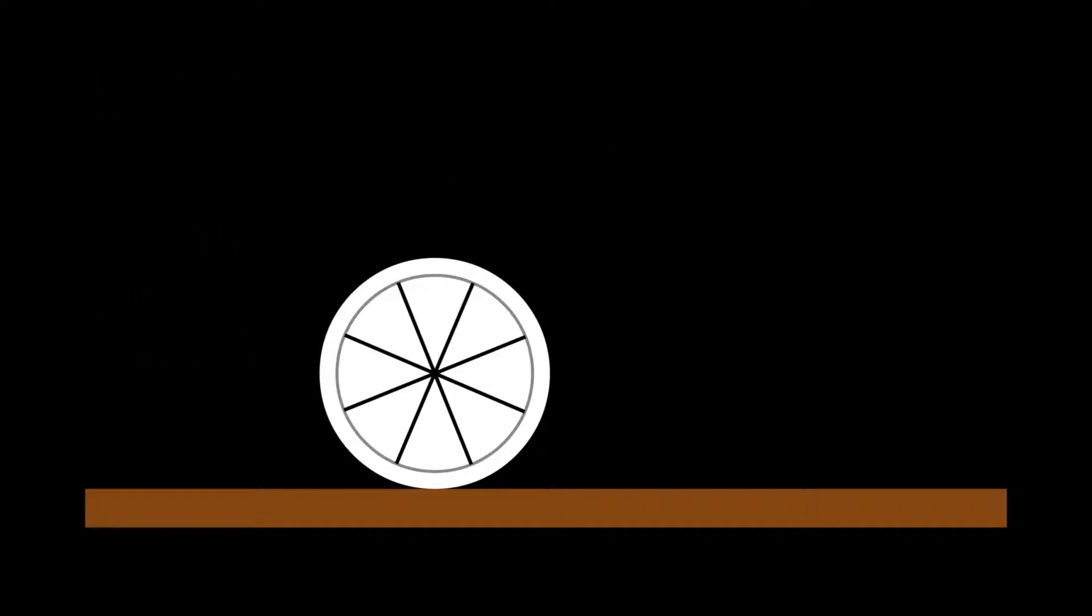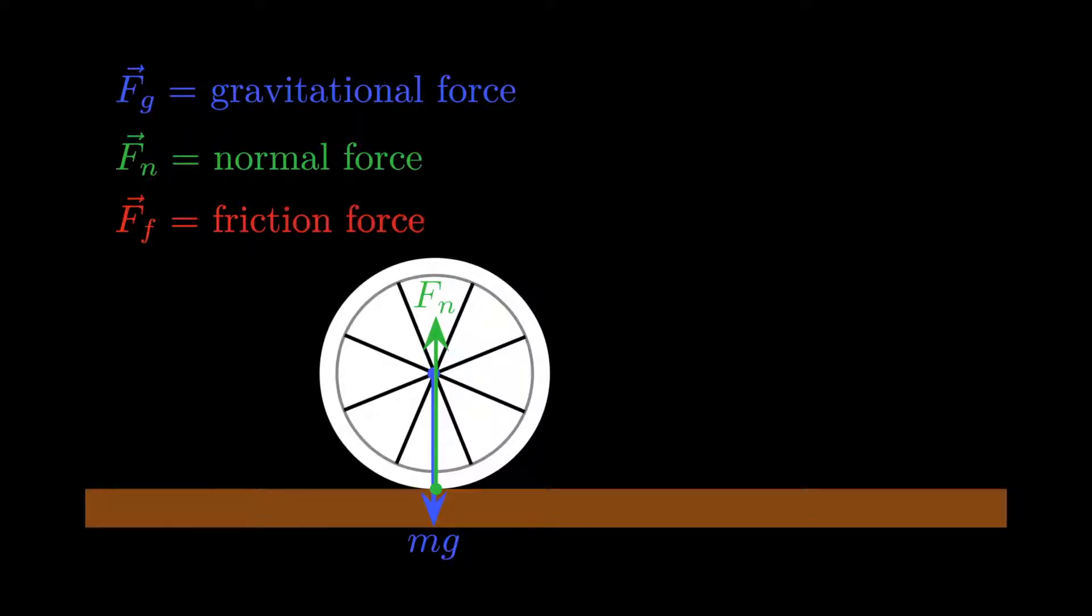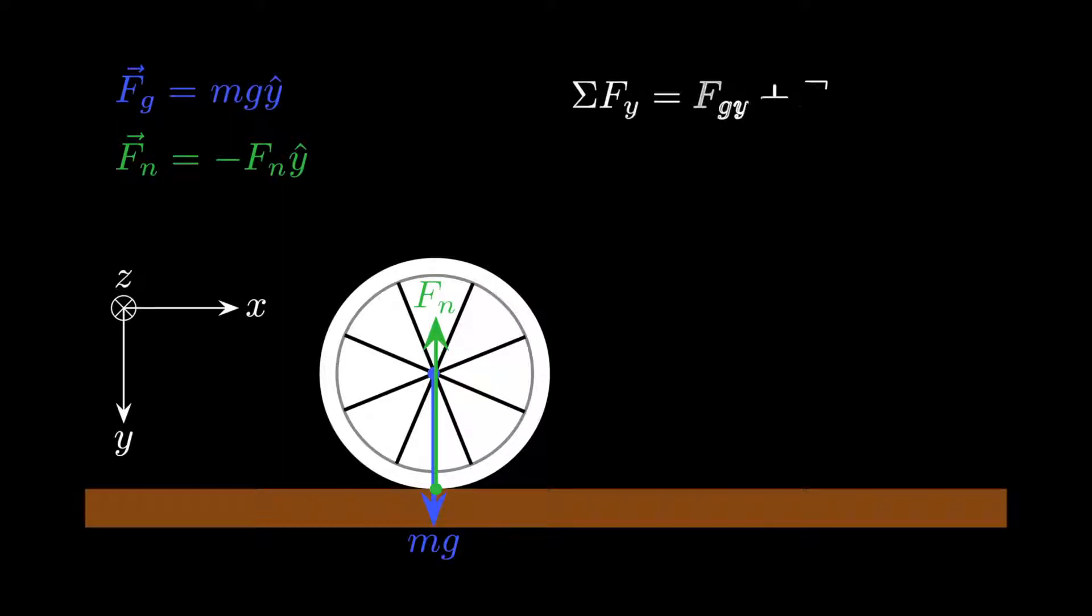We begin with a free body diagram. As always, the gravitational force acts at the center of mass, has magnitude mg, and points toward the center of Earth. The table gives rise to two forces, a normal force acting perpendicular to the surface, and a friction force that acts parallel to the surface. Both of these forces act at the point of contact between the object and the table. The direction of the friction force turns out to be a little tricky to determine in general, as it depends on both the translational and rotational velocities. We'll return to this issue in a moment. For now, let's just focus on the vertical direction. If we take the x-axis pointing right and the y-axis pointing down, then the z-axis points into the screen. Using this coordinate system, the gravitational force points in the positive y-direction, while the normal force points in the negative y-direction. Substituting into Newton's second law, and noting that there's no motion in the y-direction, we can immediately determine that the magnitude of the normal force is equal to the weight of the object.